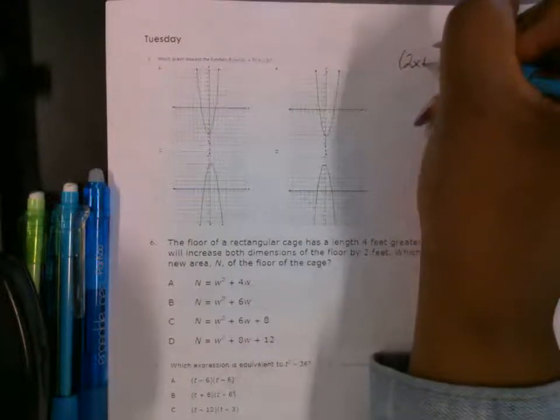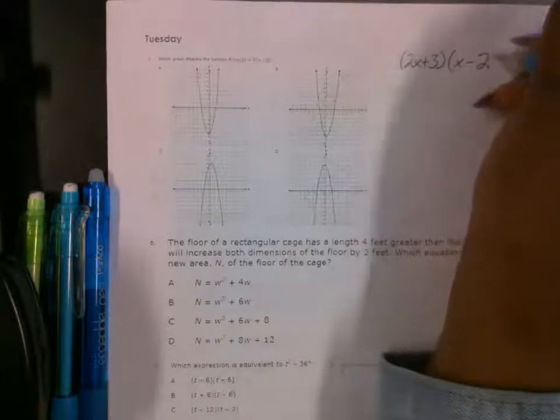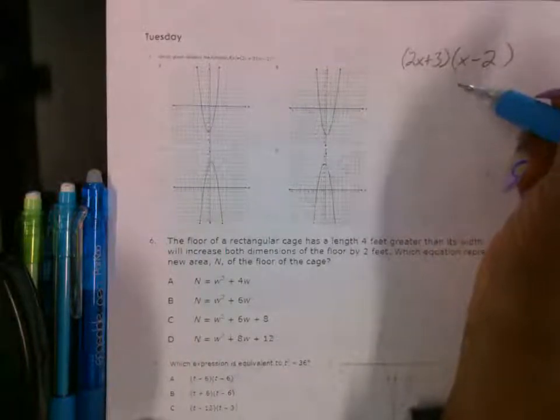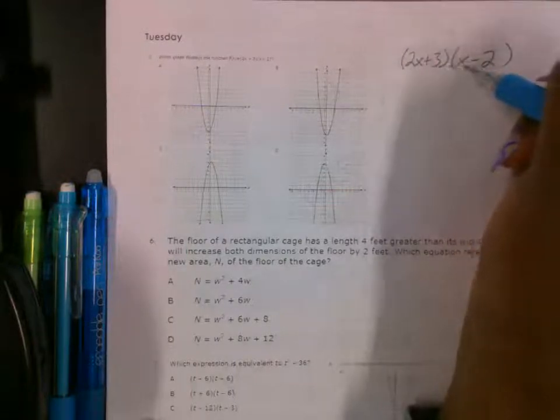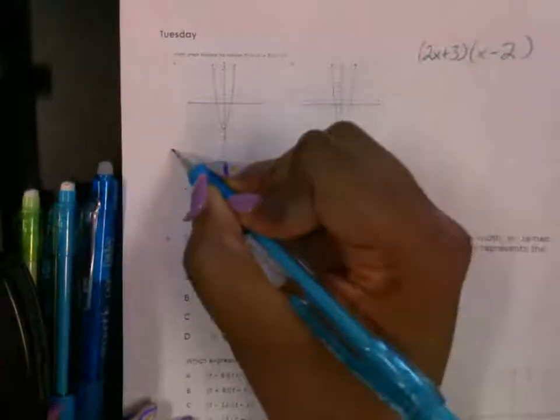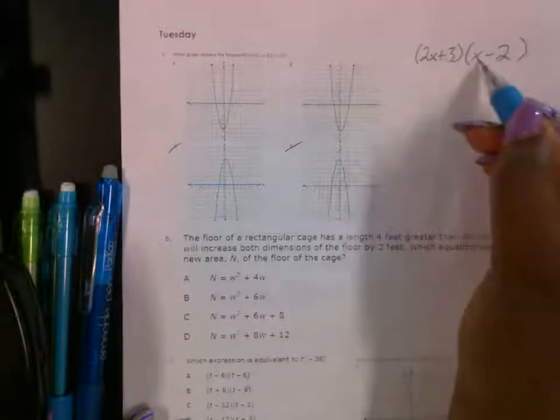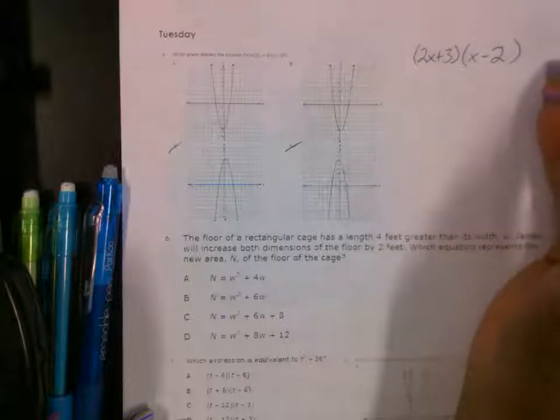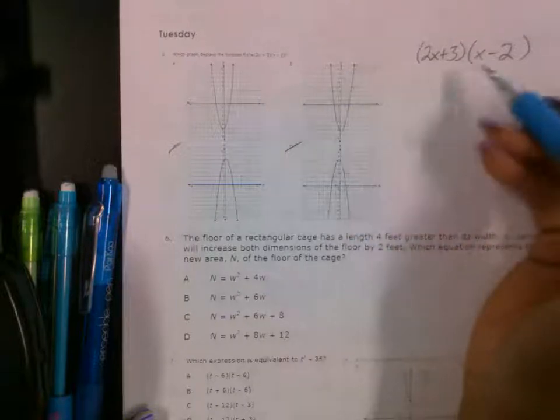We got 2x plus 3, and we got x minus 2. Okay, so we're going to figure out where they cross. And this one's going to be an upward parabola because the x squared term, when I multiply this together, it's going to give me a positive. So I'm going to go ahead and cross out the downward ones because when I do the FOIL method and I multiply the first together, that's going to give me a positive 2x squared. So since that A term is a positive, that means that I'm going to have upward parabola.